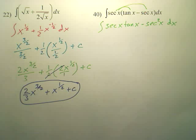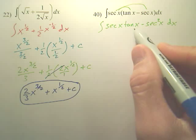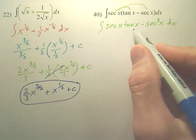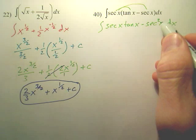From there, you might go, what? That doesn't help me at all. But what you would notice is what derived gives you secant tangent? What, when you derive it, gives you secant tangent? What, when you derive, gives you secant squared?